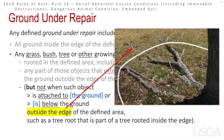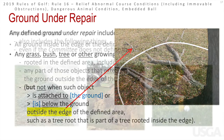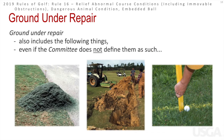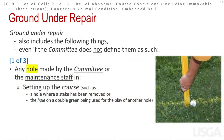The term ground under repair also includes certain things even if the committee does not define or mark them. This includes any hole made by the committee or maintenance staff — such as a hole from a removed stake, or a hole on a double green. Those would be considered ground under repair even if not defined or marked by the committee.